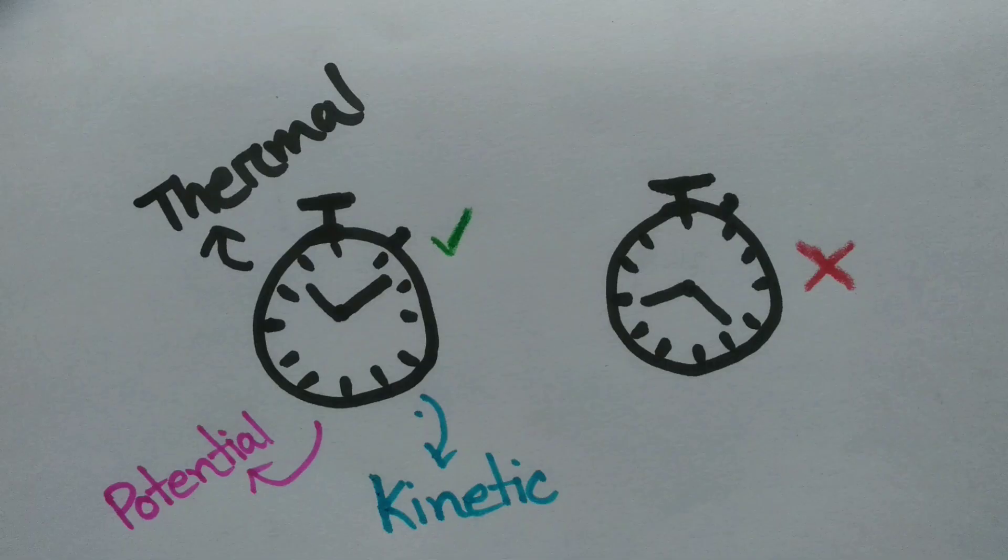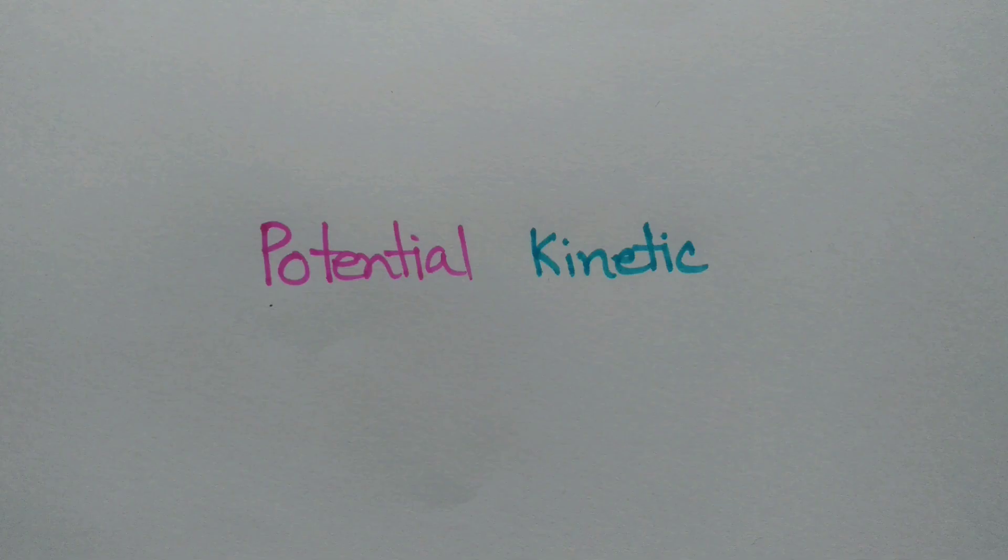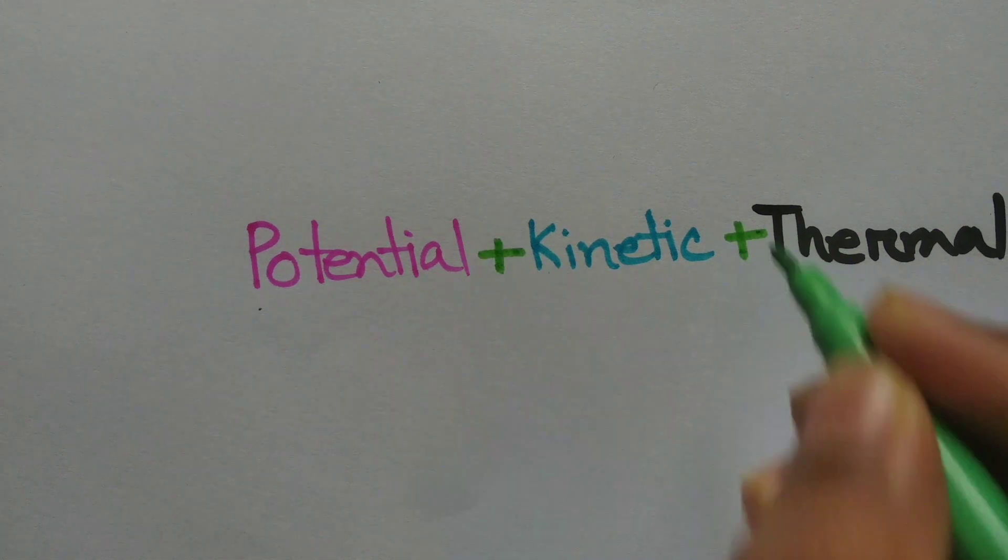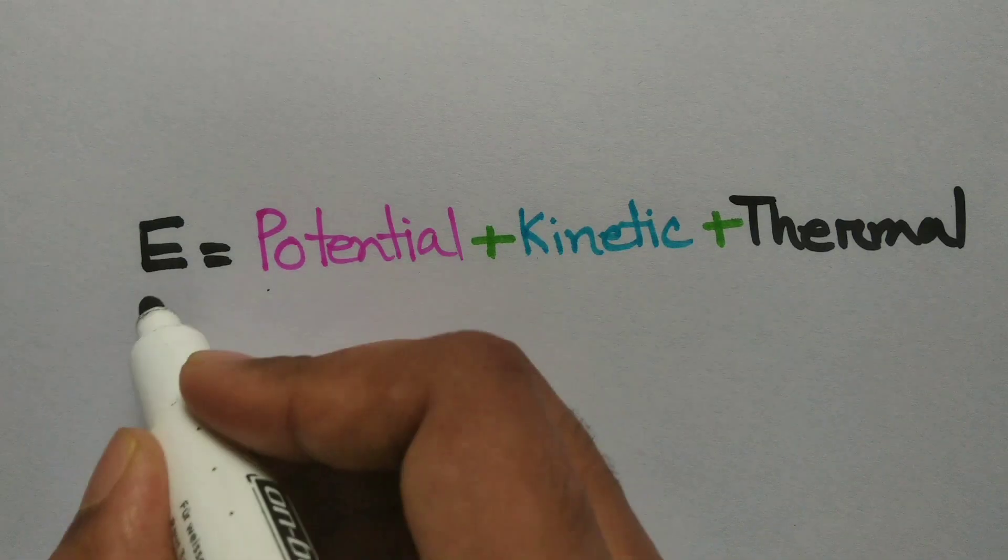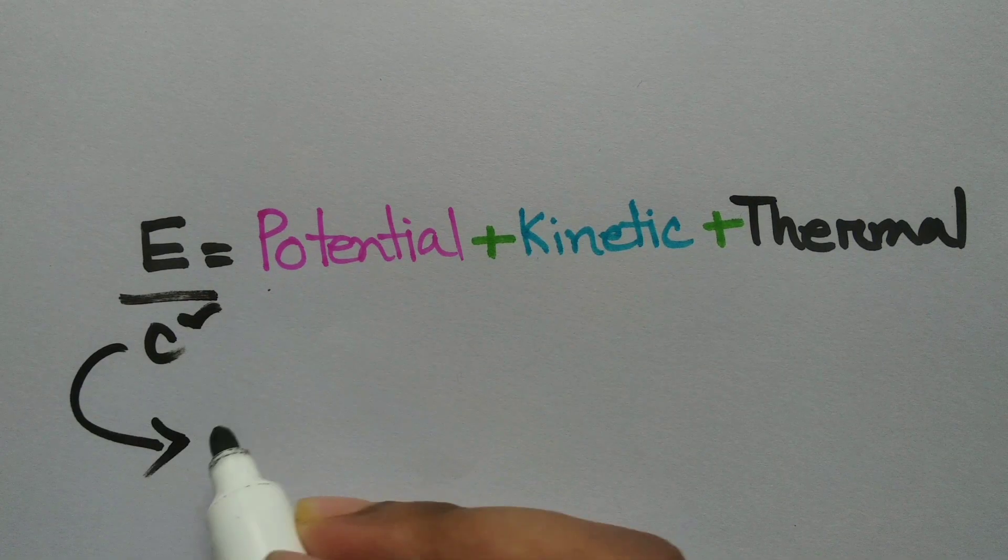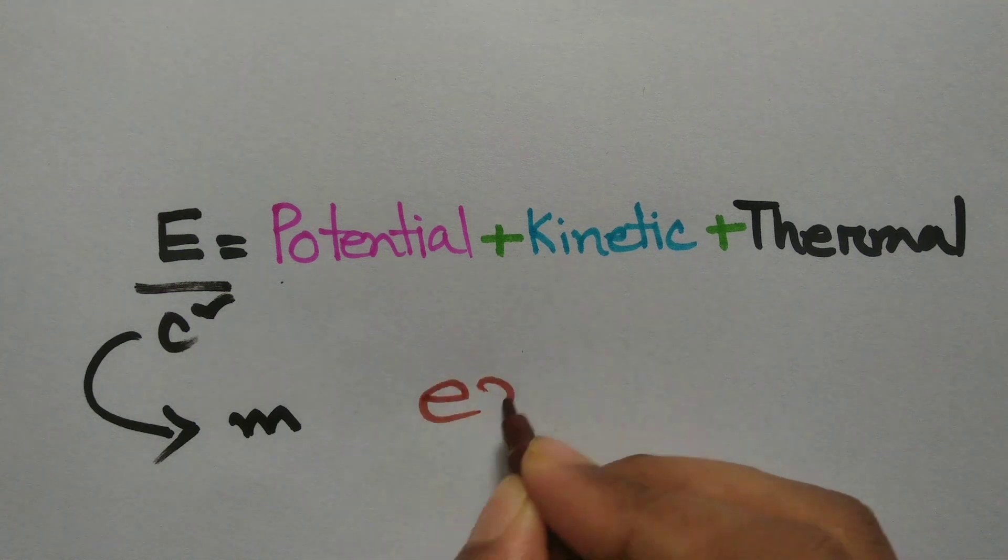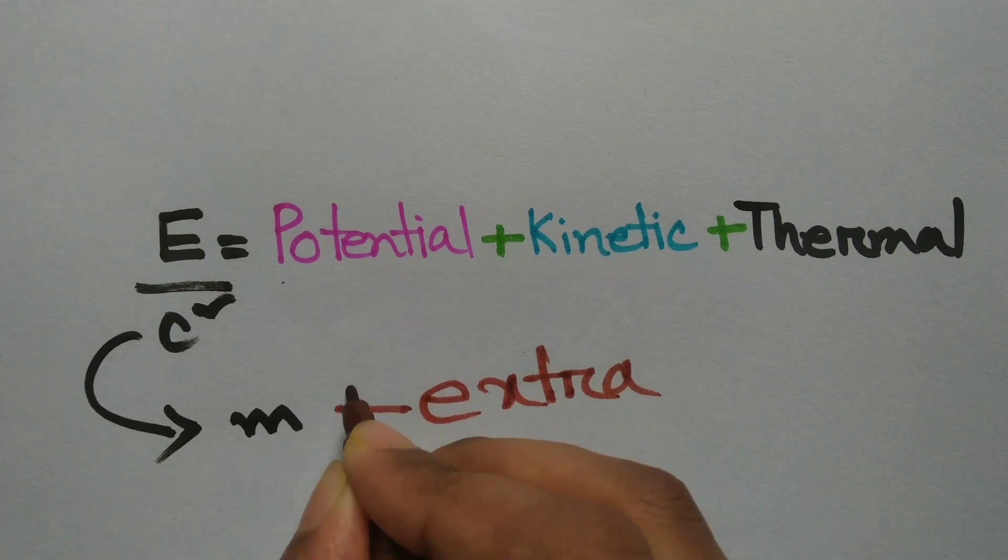Remember the first clock has some energy which are potential, kinetic, and thermal. Dividing the energy by c squared, we get the mass. Guess what? This is the extra mass. This is so small that without sensitive equipment, you can't even measure it.